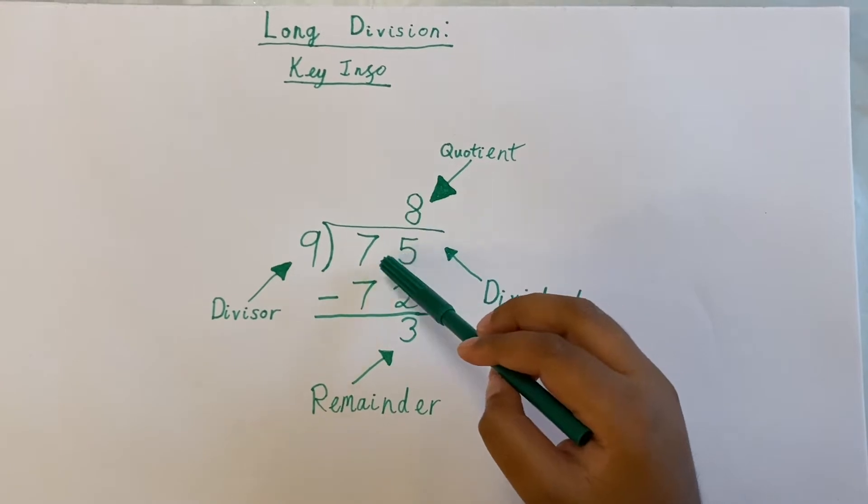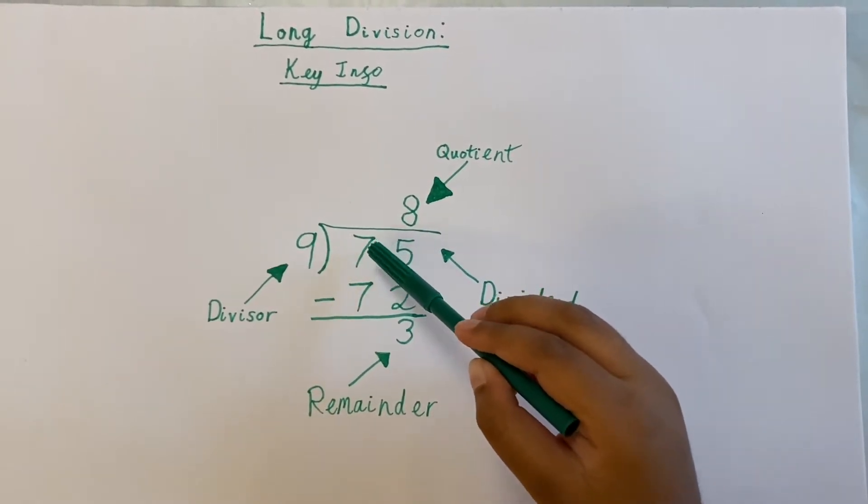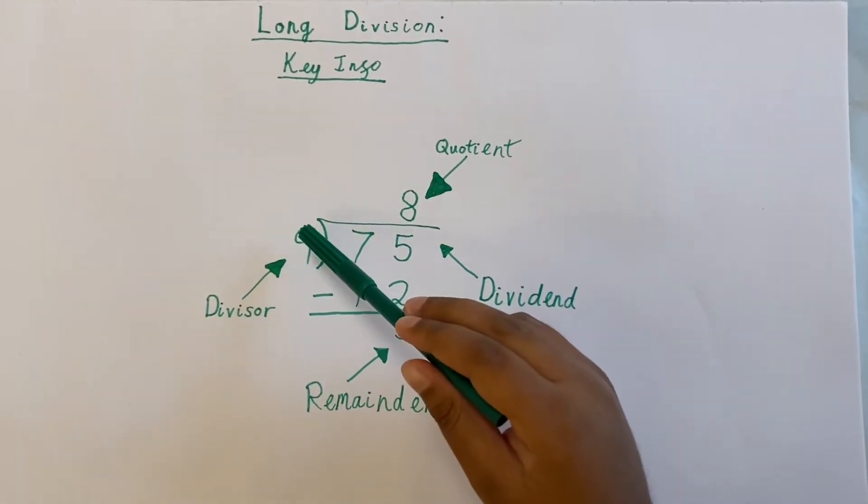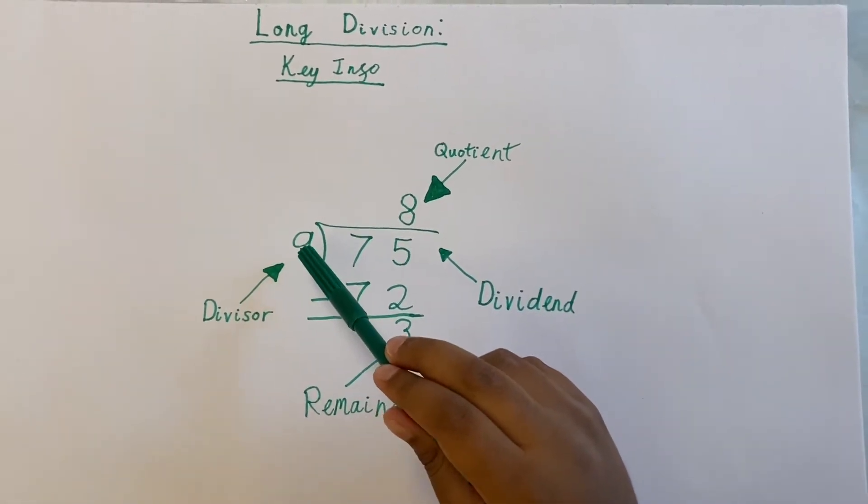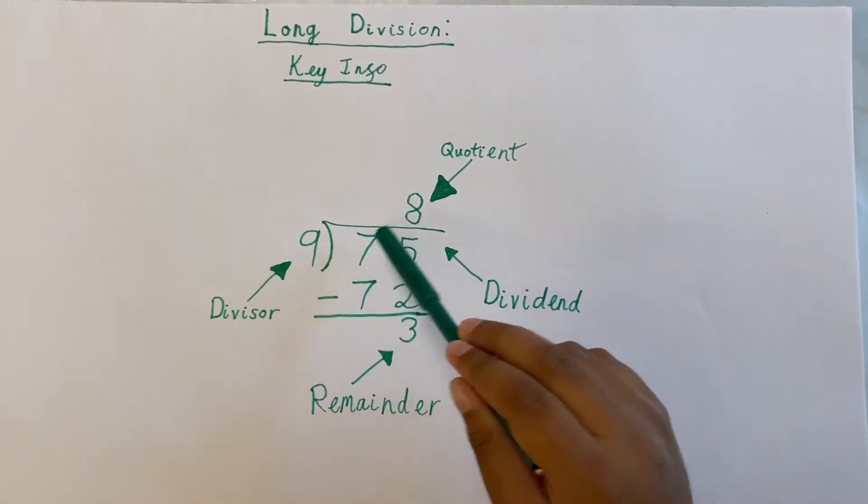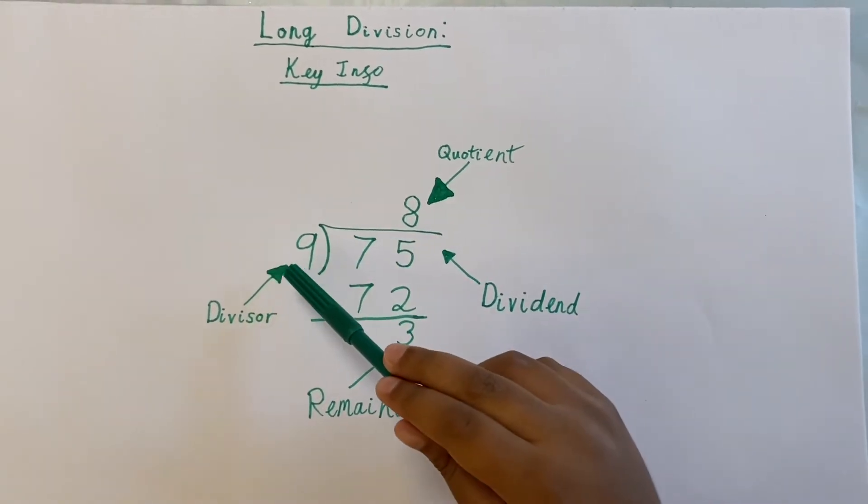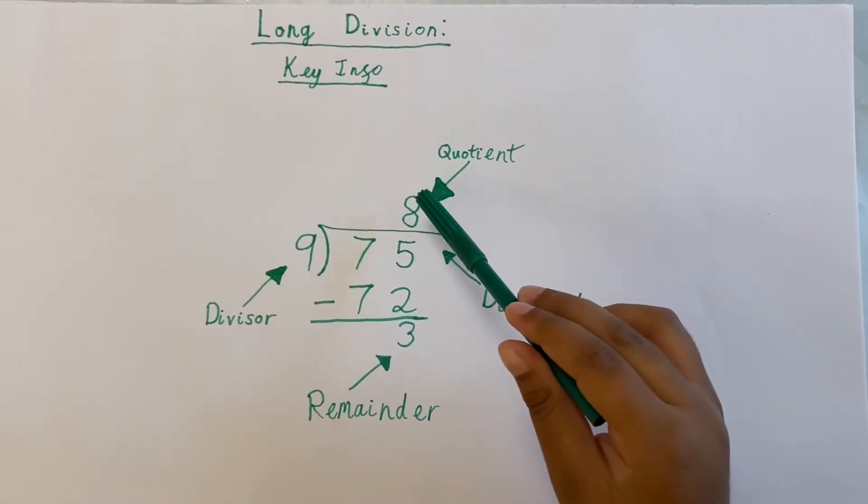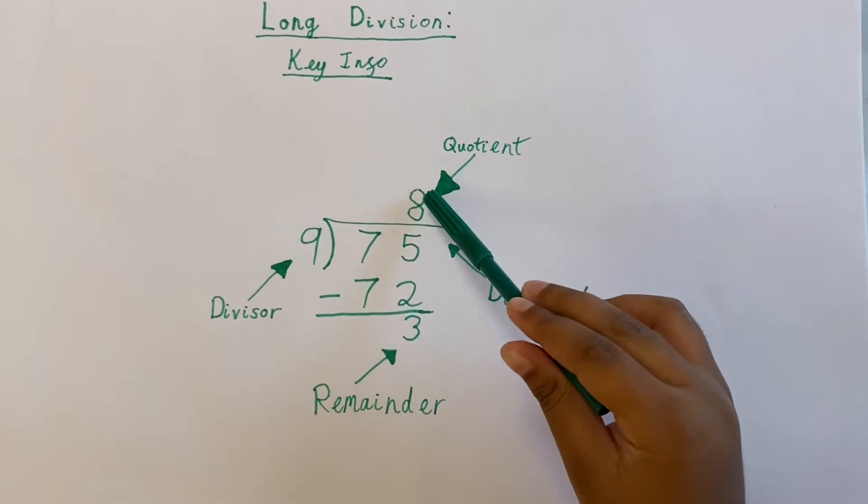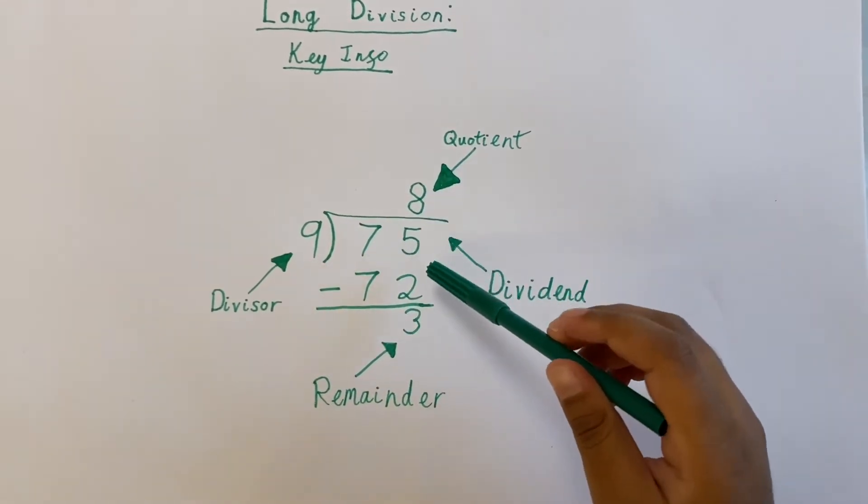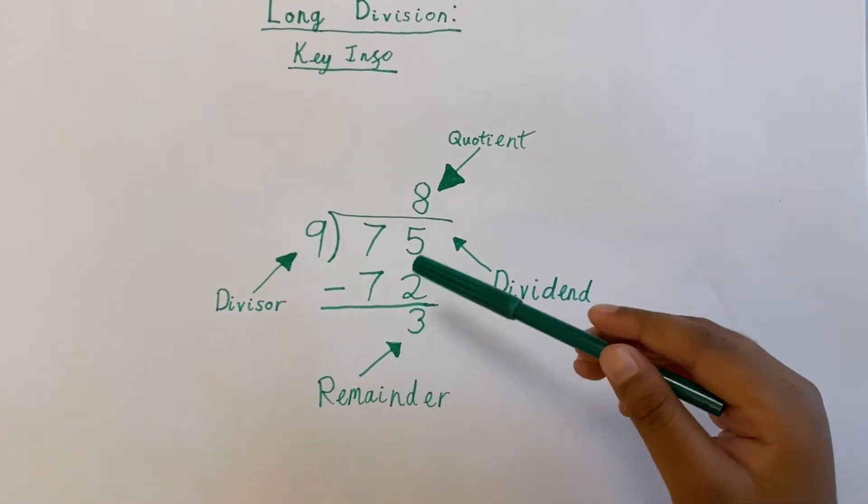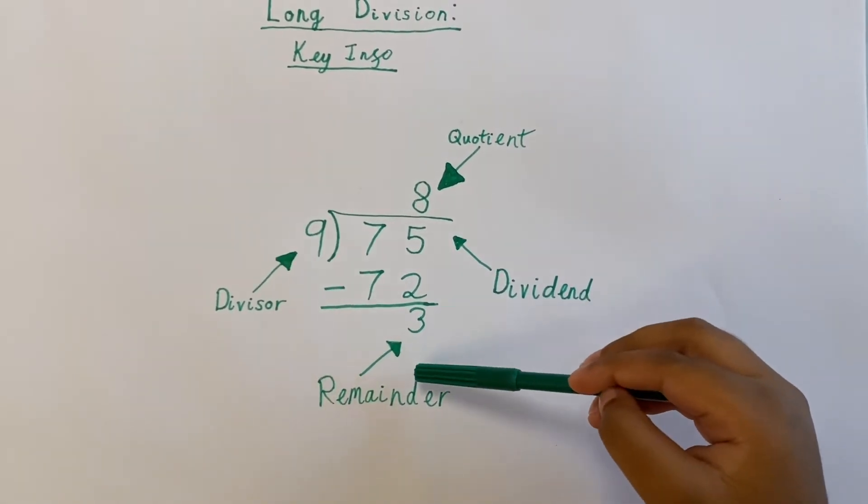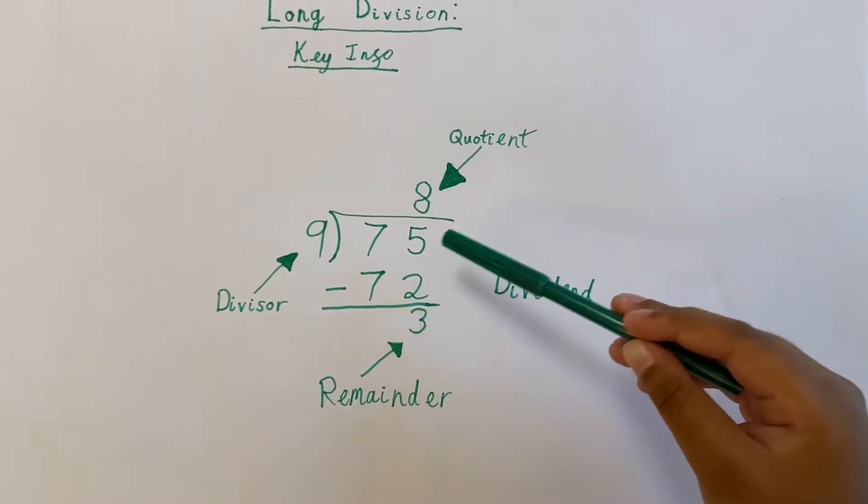The number here is the divisor, in which we are dividing the dividend into equal parts. Here is the quotient, the answer of our division. Here is the remainder, where there is the leftover number which we cannot divide.